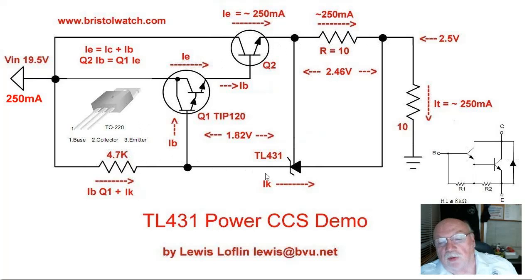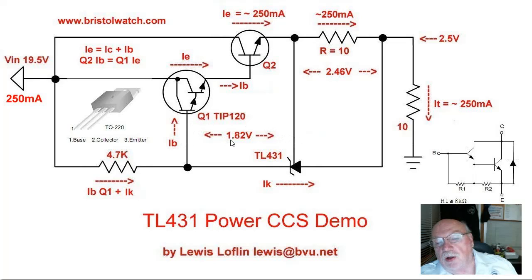Note that there is a small current IK from cathode to anode, which I disregard to a large degree. I measured the voltage from the base of Q1 to the emitter of Q2 and came up with 1.82 volts. This makes sense because we have three PN junctions in series, and each junction operates at 0.6 volts.